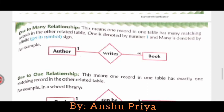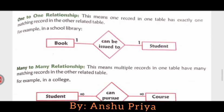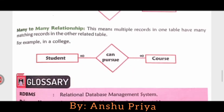One-to-one relationship means one record in a table has exactly one matching record in another related table. For example, a book can be issued to a student and one student can be issued only one book. So this is a one-to-one relationship.